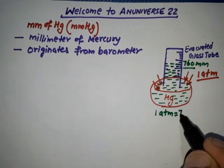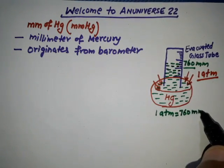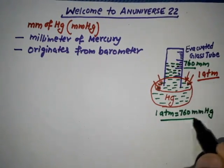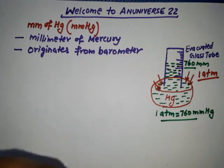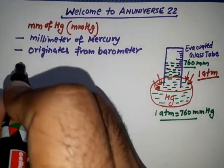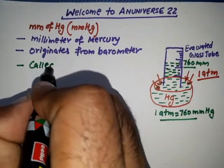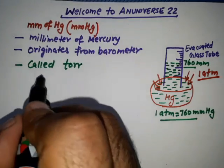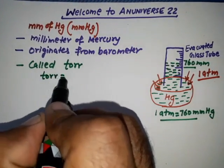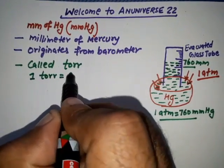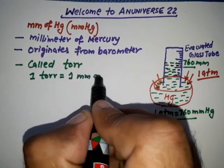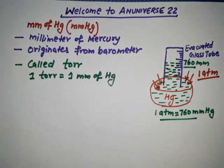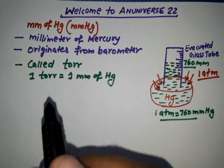This is also called torr. One torr is equal to 1 mm of mercury. Similarly, 760 torr is equal to 760 mm of mercury.